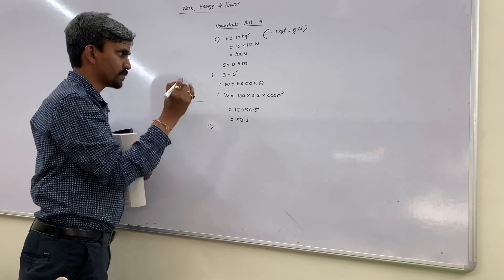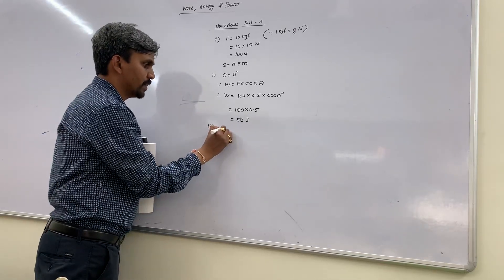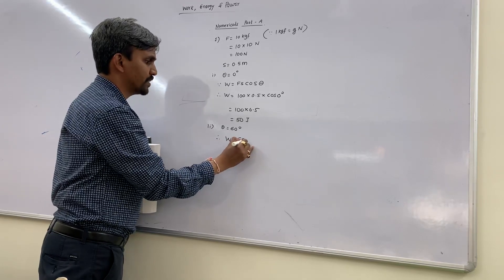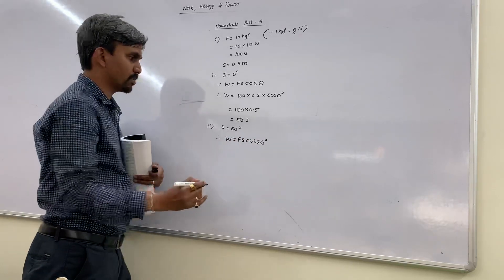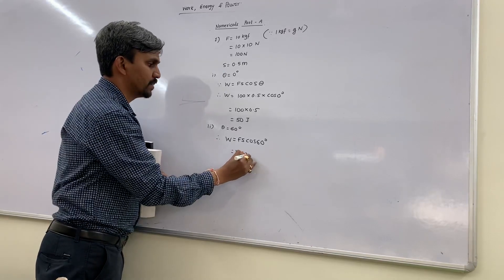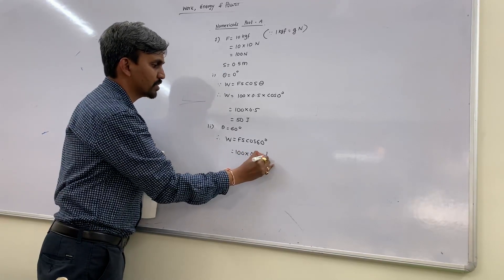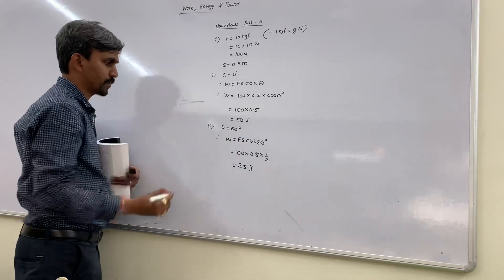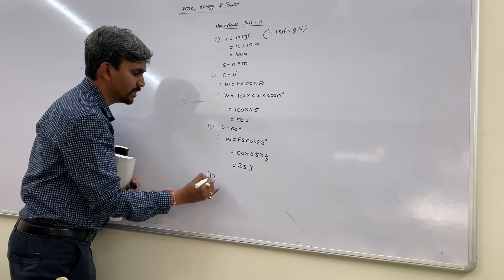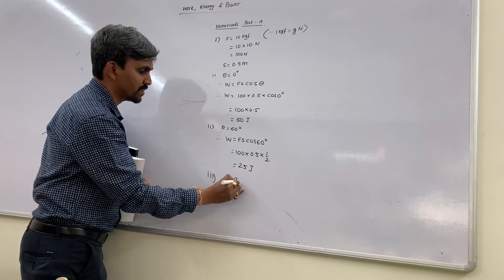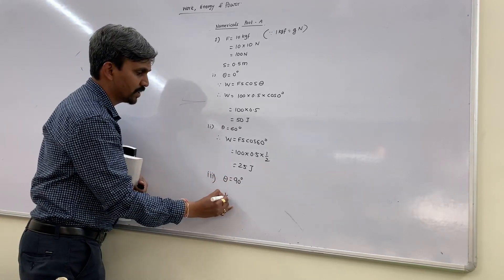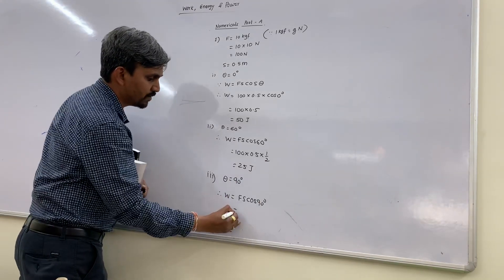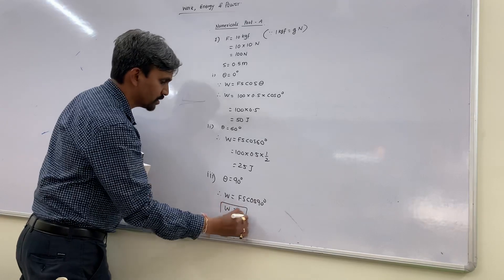Third part: theta is given as 90 degrees. Write W = Fs·cos 90. Cos 90 = 0, so work done will be 0.